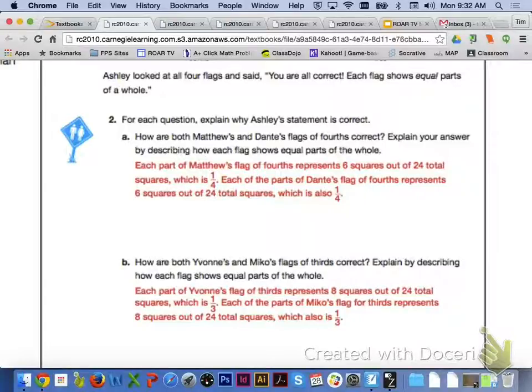If we take a look at letter A, for each part of Matthew and Dante's flag of fourths, they are both representing six squares out of the total 24 squares, which is going to be equivalent to one-fourth. The same thing is happening with letter B. Each part of Yvonne's flag and Miko's flag for thirds is representing eight squares out of the total 24 squares, which is equal to one-third.